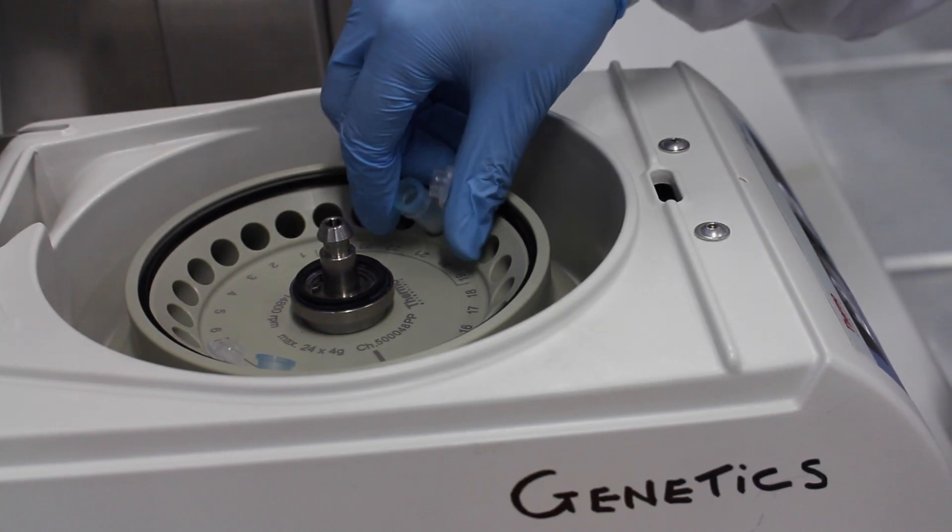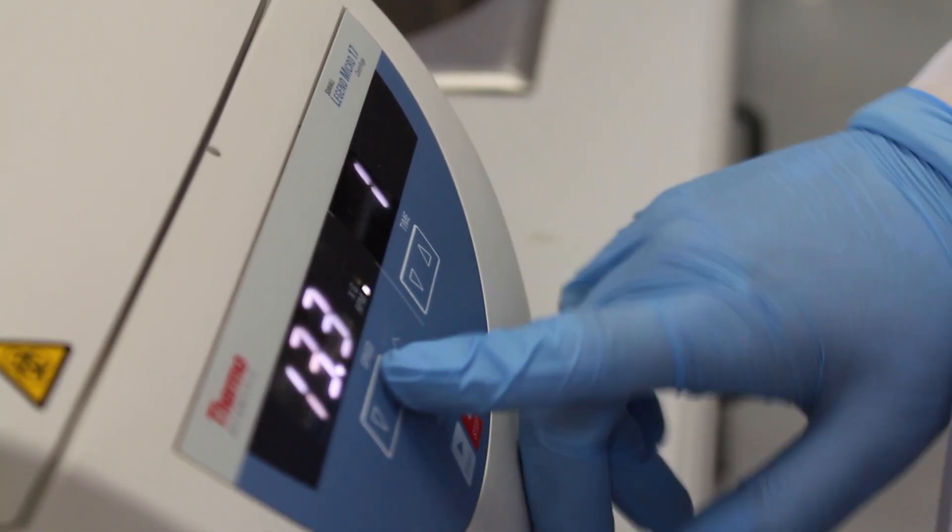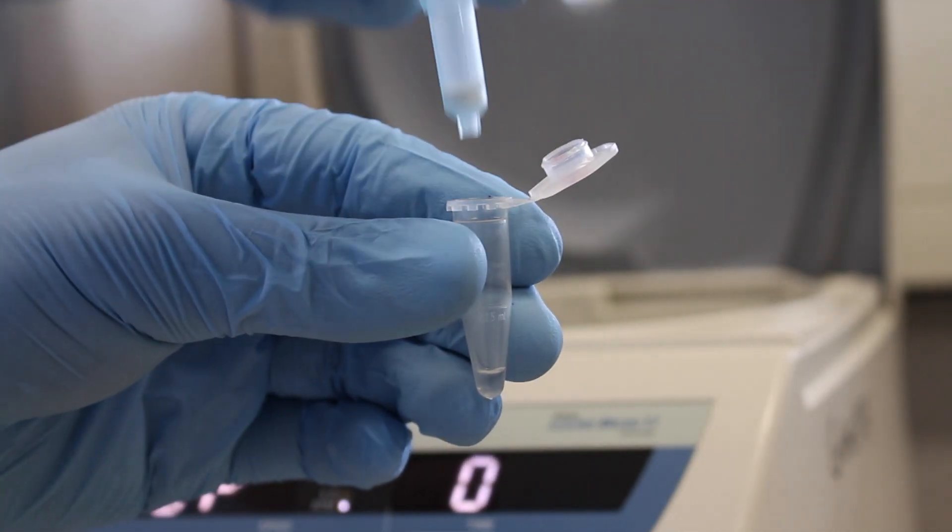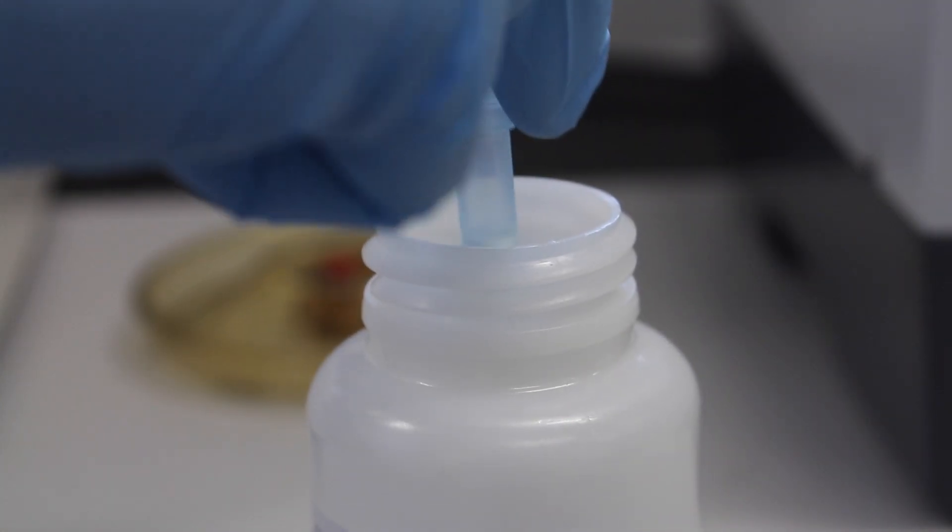The tubes are then placed into the centrifuge and centrifuged at top speed for 1 minute. This time, make sure to discard the column and not the flow through. The flow through contains the DNA.